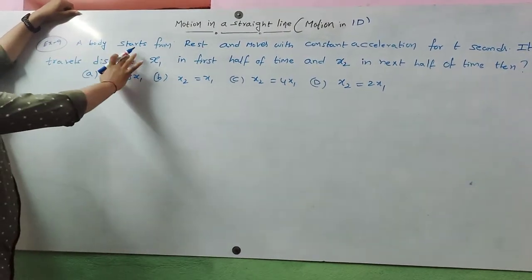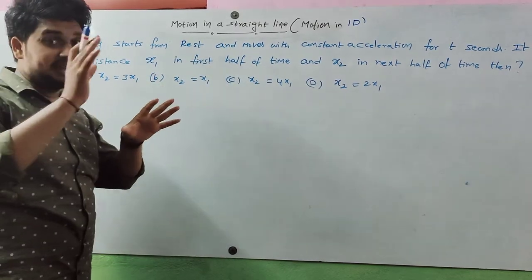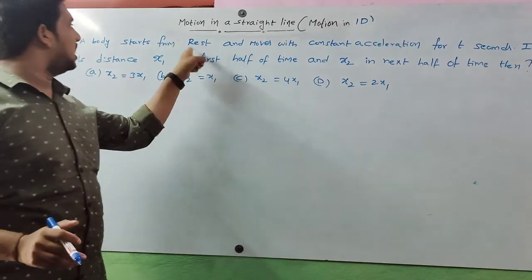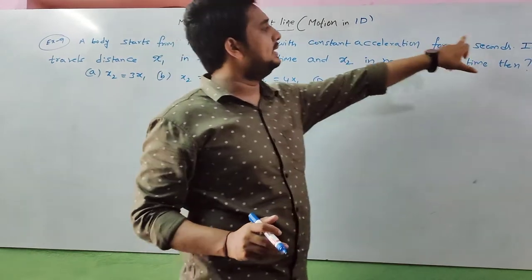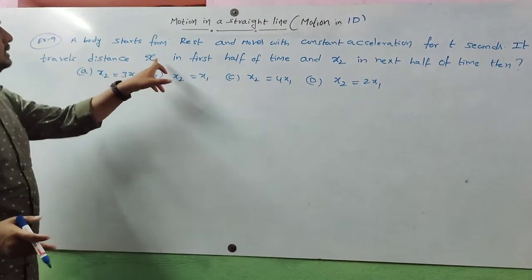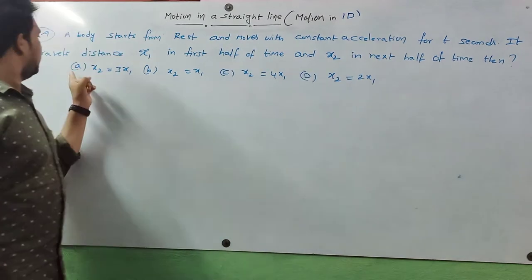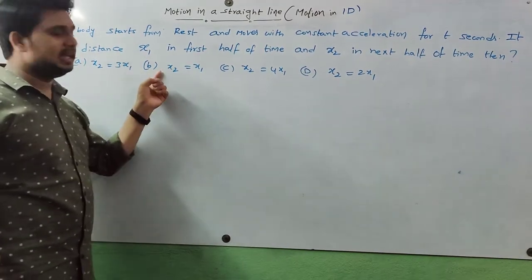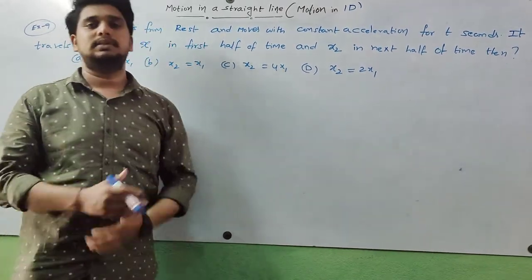The question is: a body starts from rest and moves with constant acceleration for three seconds. It travels distance s1 in the first half of time and s2 in the next half of time. The options are: (a) s2 = 3s1, (b) s2 = s1, (c) s2 = 4s1, (d) s2 = 2s1. We need to find which condition is correct.